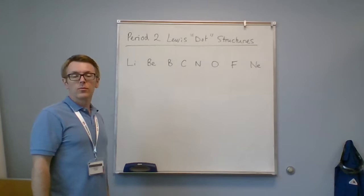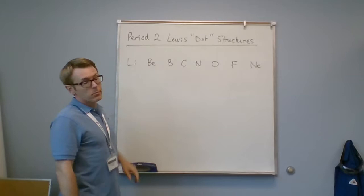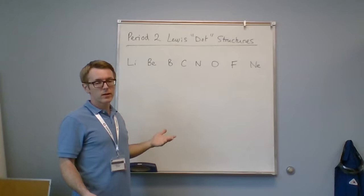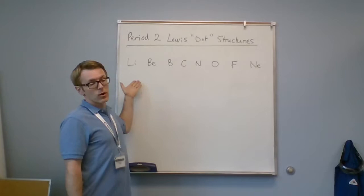Hello, this video is going to be looking at Lewis dot structures. If we take Period 2, remember periods go horizontally across the periodic table. There are eight members of Period 2. The reason why we didn't use Period 1 is there's only two members, so it doesn't represent other periods.